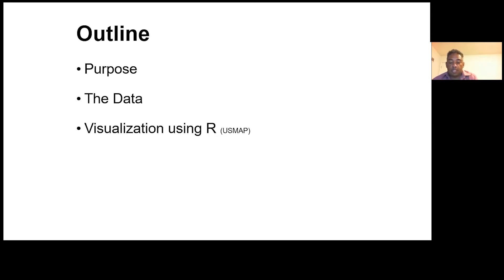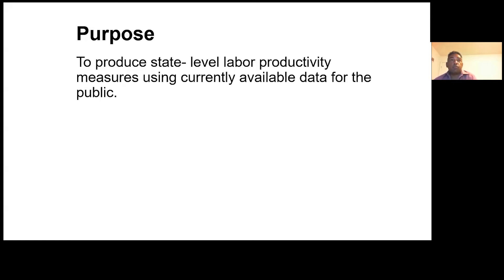On June 4th, 2019, our office published the experimental series of state labor productivity and costs for the private non-farm sector starting in 2007, which includes output per hour (labor productivity), output, hours worked by all persons, unit labor costs, and other economic indicators. By analyzing state-level labor productivity data, users can learn about regional business cycles, the persistence of regional income inequalities, and determine which states are driving national productivity trends. Today I'll cover the purpose of why we produce the data, the data sources we use to create the estimates, and some visualizations.